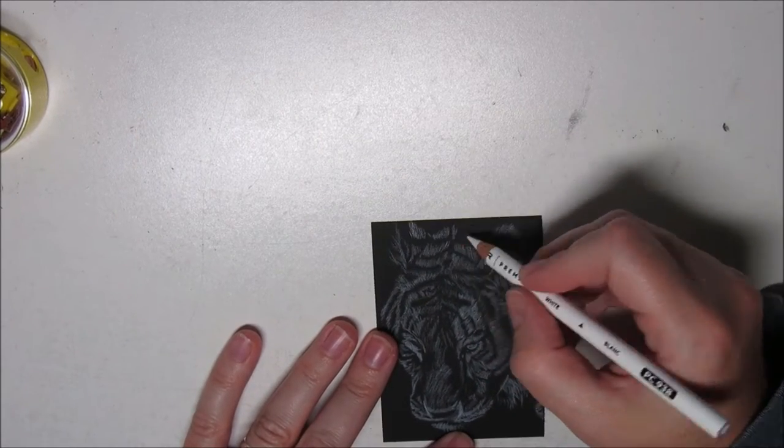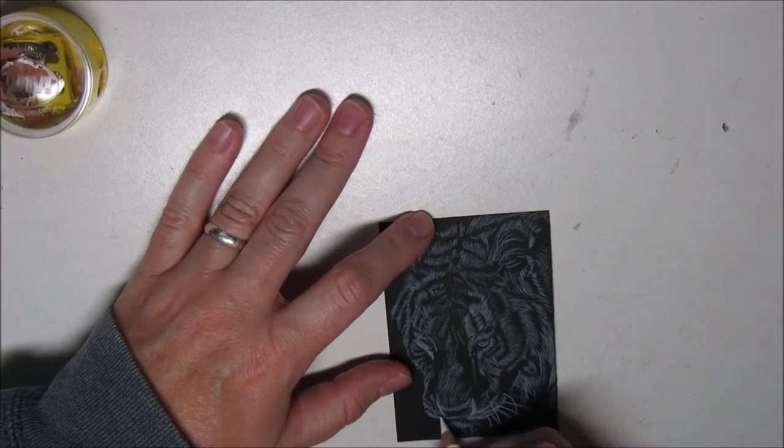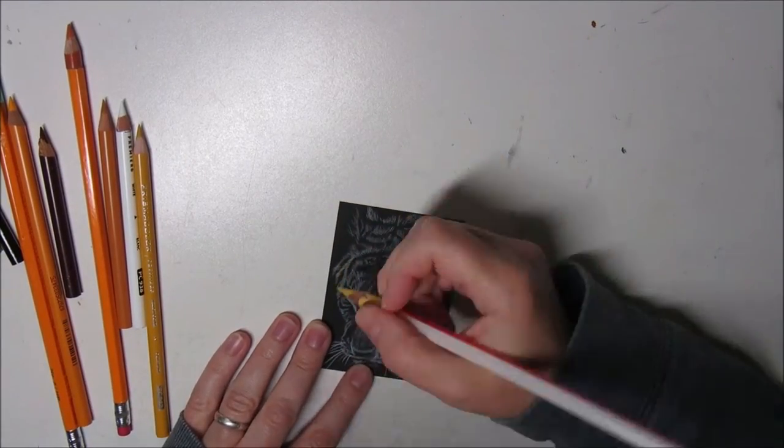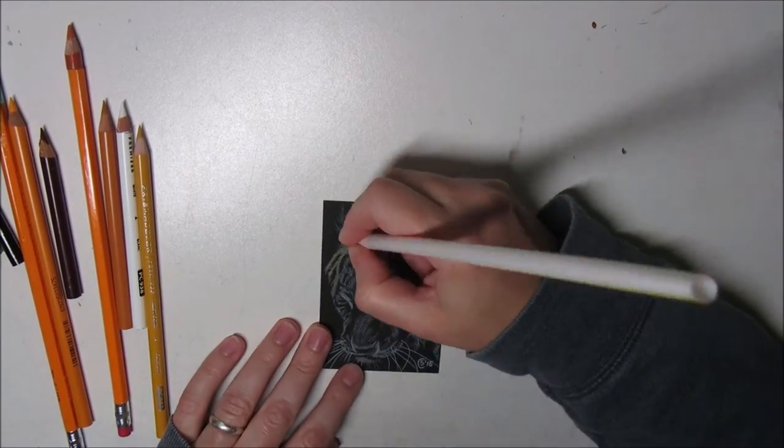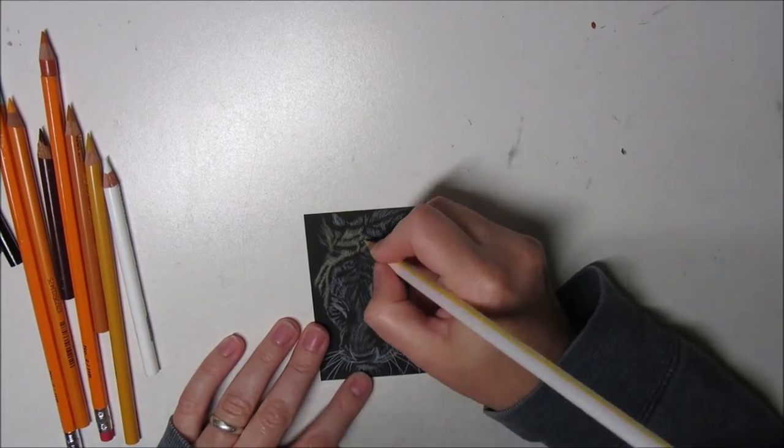When I was pretty much done with my white underpainting, I went over the lighter areas, like the fur around the eyes, and made it a little bit whiter. Then I used my second lightest pencil, which was sand.